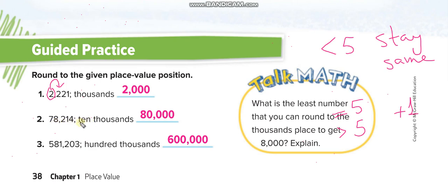Next: 78,214 rounded to the nearest ten thousand. Where is the ten-thousands place? Count: ones, tens, hundreds, thousands, ten thousands — that's the 7. We circle 7 and check the next digit, which is 8. Since 8 is more than 5, we add one: 7 becomes 8, and the remaining digits become zeros — giving us 80,000.